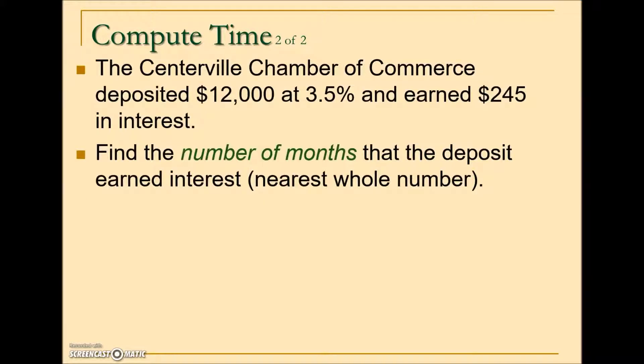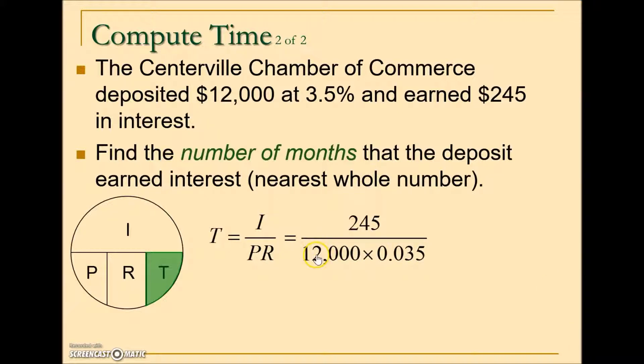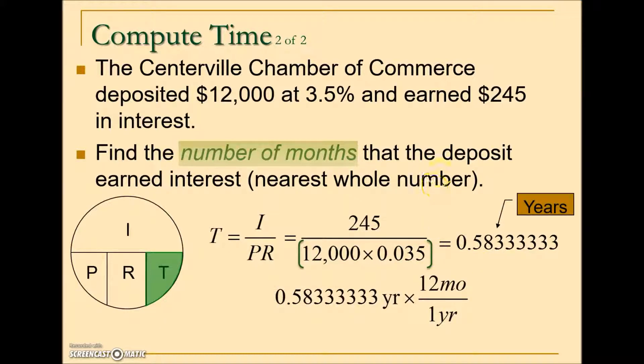In this last problem, the Centerville Chamber of Commerce deposited $12,000 at 3.5% and earned $245 in interest. This is another example of a savings versus a borrowing application. The problem here is asking us time in terms of the number of months. We're solving for T. Our formula then is the interest $245 over the principal times the rate. This answer is in years, and just like the last one, we need to convert this into months. But instead of multiplying by 360 days, we will multiply by 12 months.